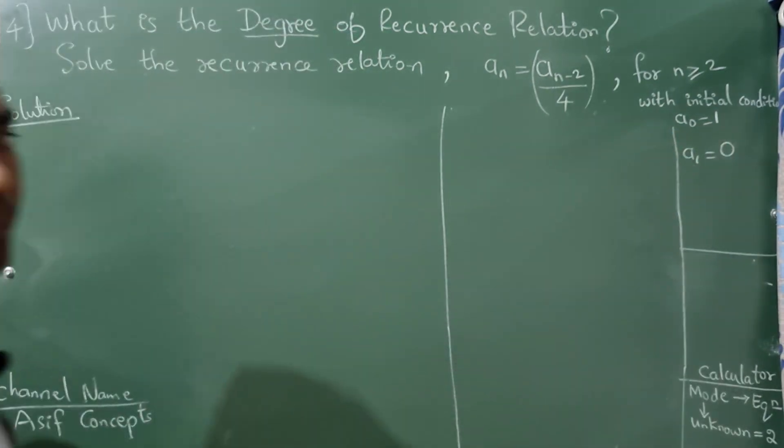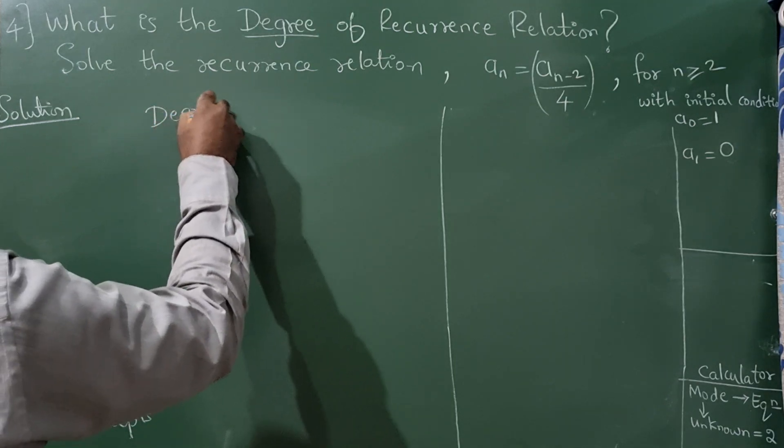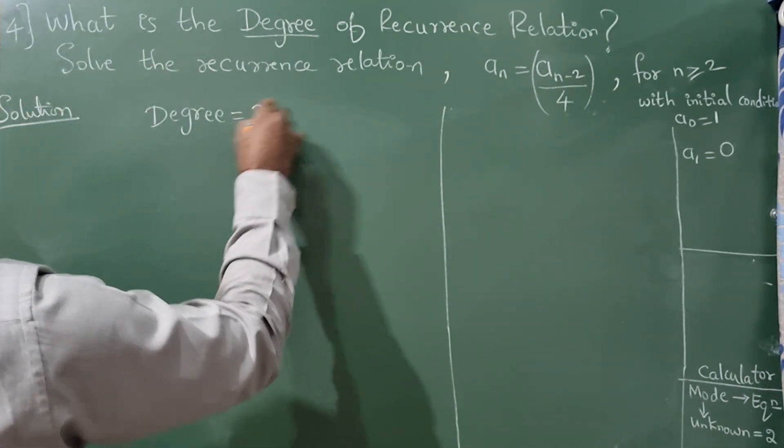a_1 = 0. Now let us write first degree. Since it is a_(n-2), so the degree will be 2.